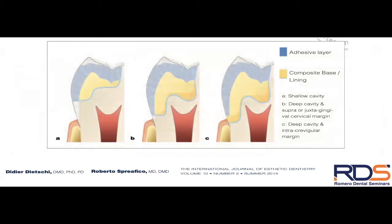This diagram from one of Dietschi's manuscripts shows indirect restorations in light blue, with a resin-based composite lining shown in yellow. In the final photo — scenario C — where the margin is below the gingival margin with no enamel, they elevate the margin using resin composite to bring it supragingival, making it easier to obtain an impression or scan and to remove excess cement at delivery.